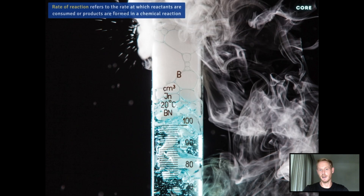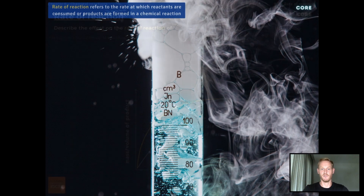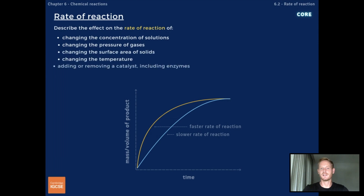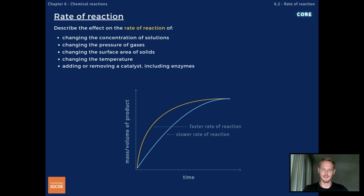Rate of Reaction refers to the rate at which reactants are consumed or products are formed in a chemical reaction, so it's essentially a measure of how quickly a reaction occurs. Factors that affect the rate of reactions include the concentration of solutions, pressure of gases, the surface area of solids, temperature, and adding or removing a catalyst.